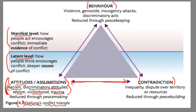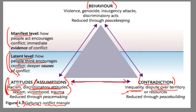Racism — we see that in different societies — sexism, discriminatory attitudes, discrimination based on any number of things: sex, gender, race, ethnicity, religion, anything. This is at the latent level, meaning how people think encourages conflict. It's something that's internalized — you may not see it overtly, but people are thinking this and it's sort of a societal phenomenon. Similarly, on the latent level, you have contradiction: inequality that is perceived, people feeling that things are unequal, dispute over territory, and unequal distribution of resources. That's also internalized and brewing just under the surface.